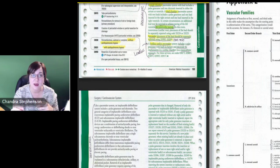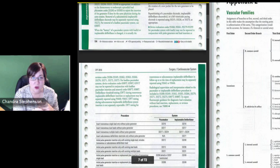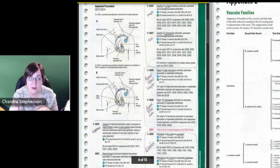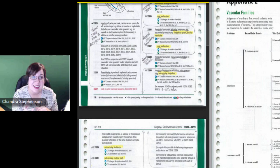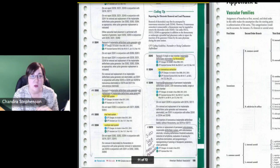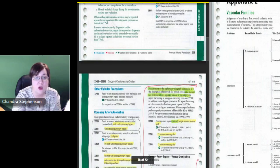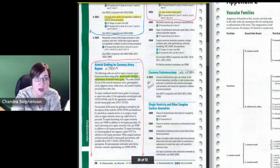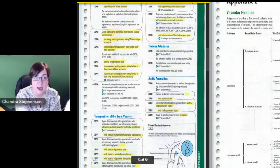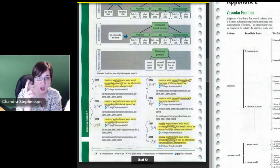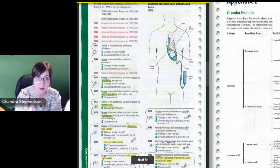But what you can do is you'll notice that all of these codes, starting with the 36215, say initial - initial second order branch, initial third order branch, and then there's an add-on code that says each additional. When we say initial, that means the first one they went into because they may have gone into the right internal carotid artery and then they may have pulled that catheter back out and gone into the right external carotid artery. They went into two different branches of the same tree.